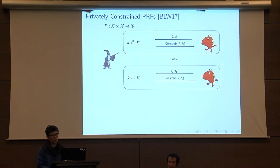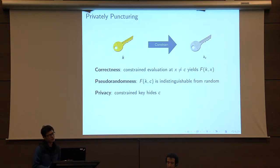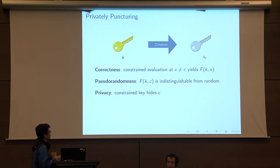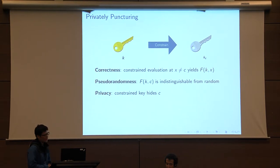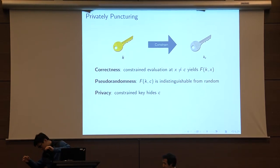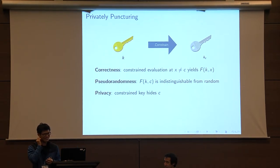For this talk, I'll be focusing mainly on private puncturable PRFs. In the next talk, you'll hear from Yulay about more general privately constrained PRFs for more general circuit constraints. Private puncturing is a puncturable PRF satisfying three properties: correctness requires that evaluating the PRF using the punctured key yields the correct PRF output at all points x not equal to the puncture point c; pseudorandomness requires that the PRF evaluation at the punctured point looks indistinguishable from random to an adversary given the punctured key.